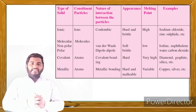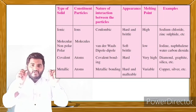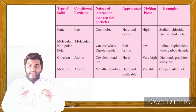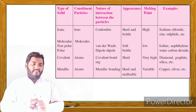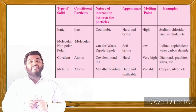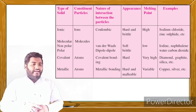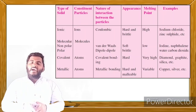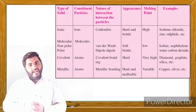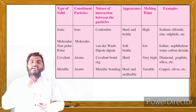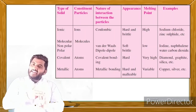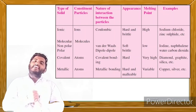Third, covalent solids — the constituent particles are atoms. Between two atoms, there is a covalent bond. Covalent solids are very hard in nature and have a very high melting point and boiling point. Examples are diamond and graphite.